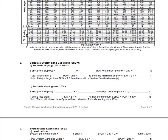Let's calculate our system sand bed width. You will use either option A or B depending upon the slope of the system. This system is level, so we will use option A. We are going to use the system sand bed area from step two — 1,200 square feet — and the chosen row length of 70 feet from step four. We will add 2 feet to our row length, bringing it to 72 feet. Dividing our sand bed area by 72 feet, we end up with 16.7 feet. On the next line, we take our pipe layout width and add 2 feet, which comes to 10.5 feet. Since 16.7 feet is greater than 10.5 feet, we will need system sand extensions.